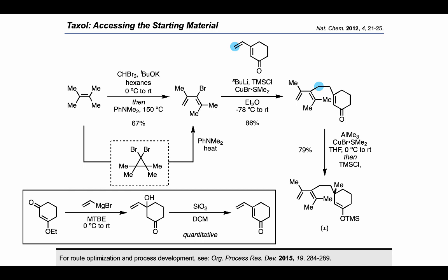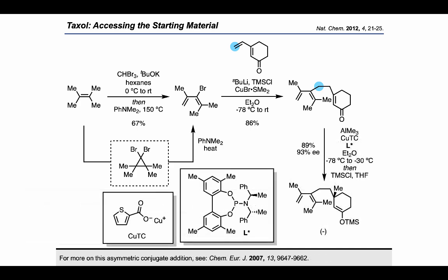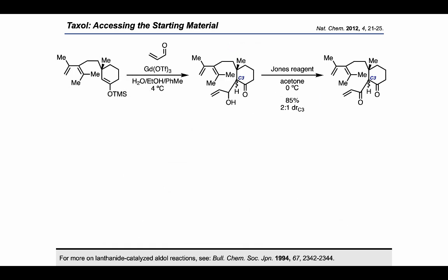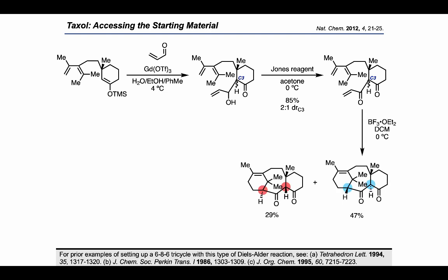Following the 1,6-addition, it was possible to carry out a 1,4-addition using trimethylaluminum and copper bromide, followed by treatment with TMS-Cl to generate the enol silane. To get the product in anti-enriched form, they carried out an asymmetric conjugate addition using a biphenyl-derived phosphoramidite ligand previously reported by the Alexakis group. With the anti-enriched enol silane in hand, the authors used gadolinium triflate in combination with acrolein as an electrophile to carry out an aldol addition, after which treatment with Jones reagent yielded the enone products as an inseparable mixture of diastereomers.